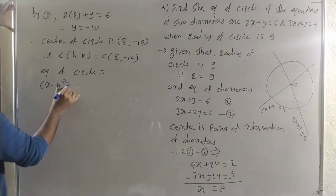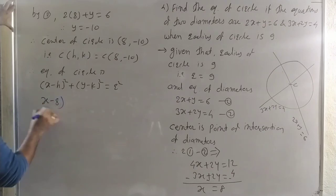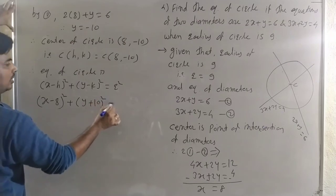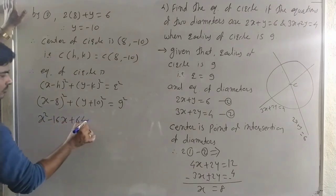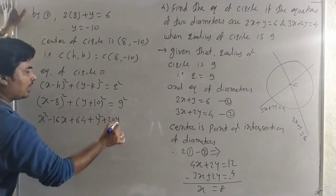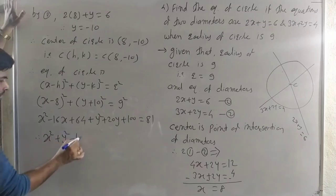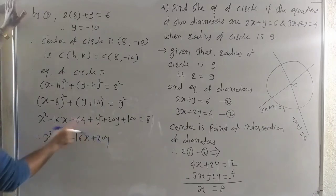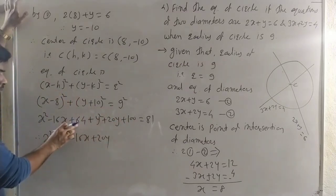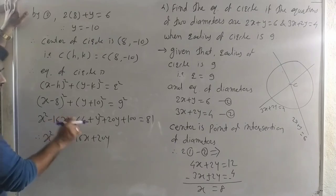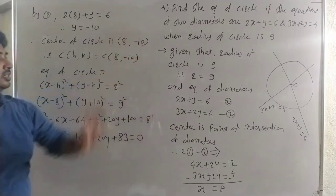With center (8, -10) and radius 9, the equation of circle is (x - 8)² + (y + 10)² = 81. Expanding: x² - 16x + 64 + y² + 20y + 100 = 81. Therefore x² + y² - 16x + 20y + 64 + 100 - 81 = 0, giving x² + y² - 16x + 20y + 83 = 0. This is the required equation of the circle.